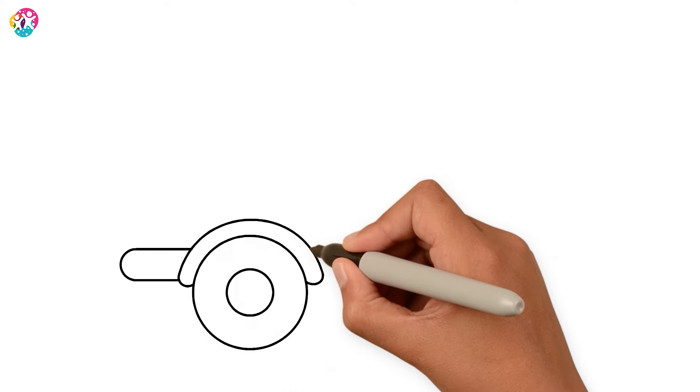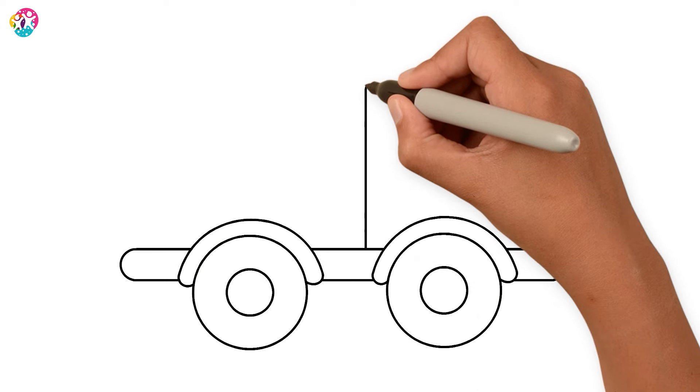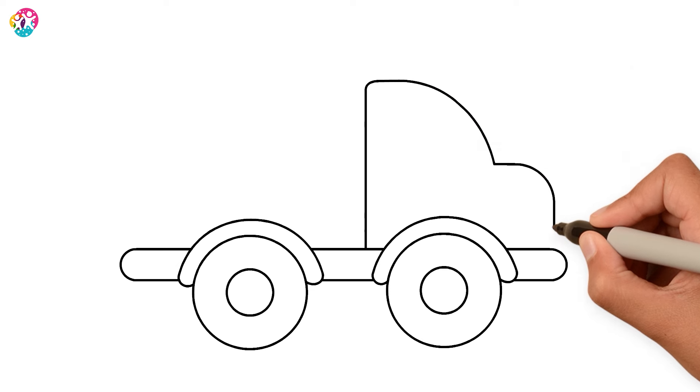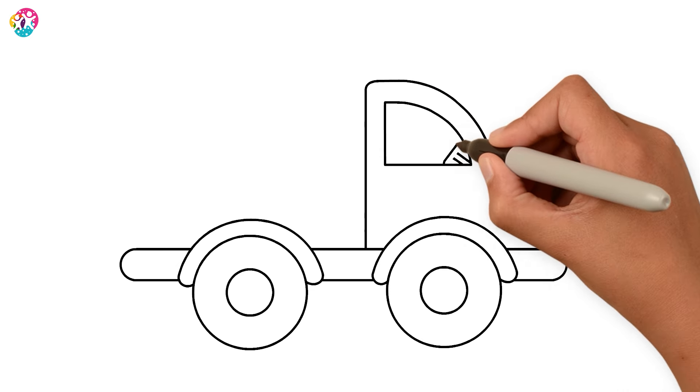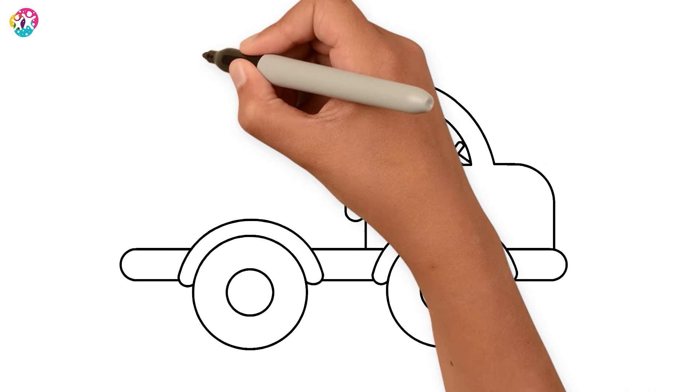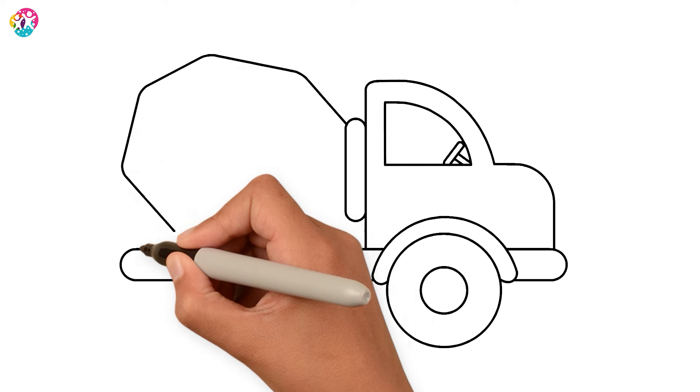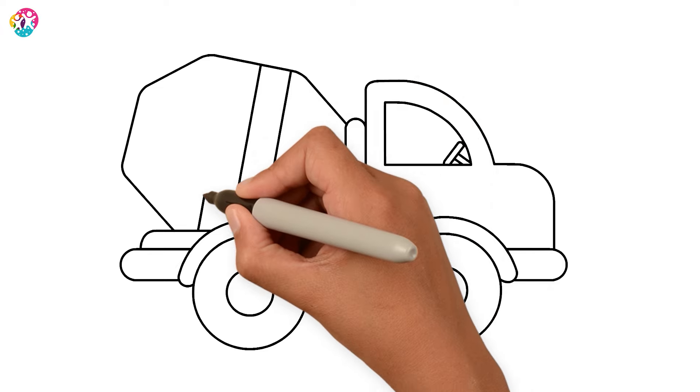Then the outline. Steering wheel to ride the truck. Oh! And the main part, the mixer. A few stripes.